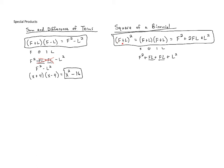So if we ever have a binomial F plus L squared or if we have a binomial F plus L multiplied by itself instead of going through the process of foiling everything out we can take the first term and square it. We can take the last term and square it and then we can also take double the product of the terms. So that's two times the product of the first and last term.